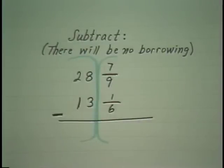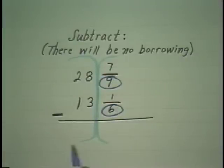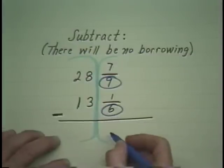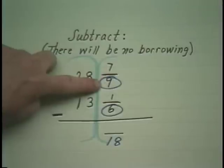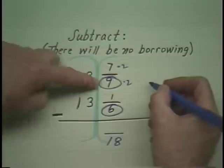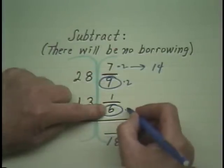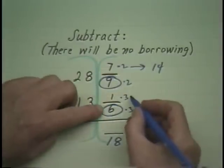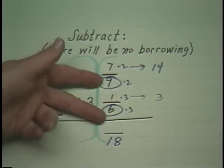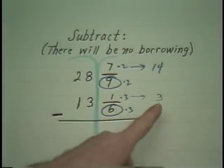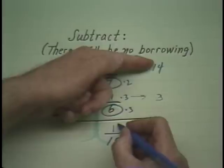Let's do the fraction portion first. In order to subtract fractions, the denominators must be the same. So we ask what's the lowest number that 9 and 6 will each divide into, and it's 18. So we build each of these to become 18. Multiplying here by 2, top and bottom, the new top becomes 14 and the bottom of course 18. Here multiplying by 3, top and bottom as well, the new top becomes 3 and the bottom of course 18. Then when the denominators are the same, you subtract the tops in this order.